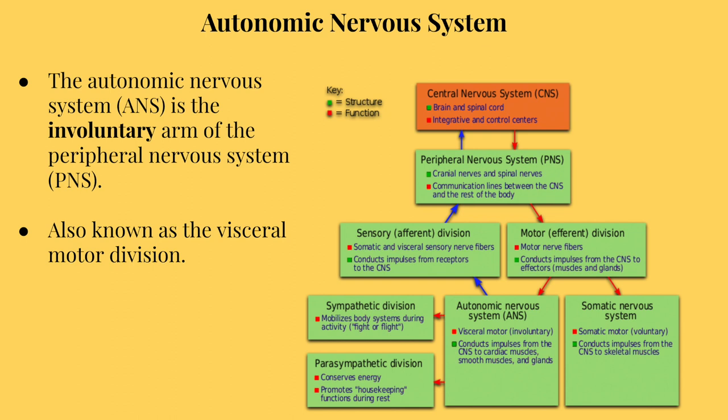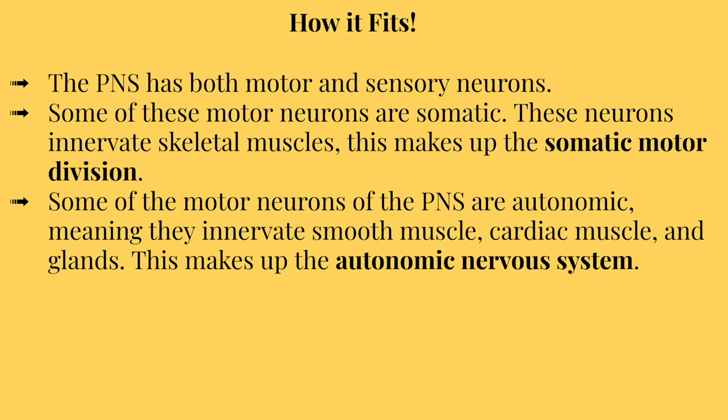The autonomic nervous system is also referred to as the visceral motor division of the PNS, because it controls homeostasis of visceral organs such as the lungs, the heart, and the stomach. Before we get started, I want to make sure you understand how the autonomic nervous division fits into the nervous system as a whole.